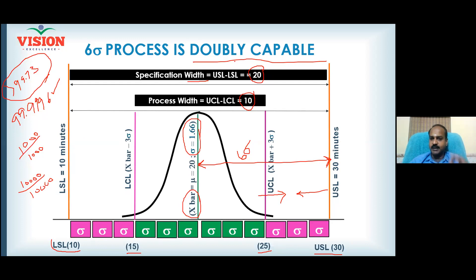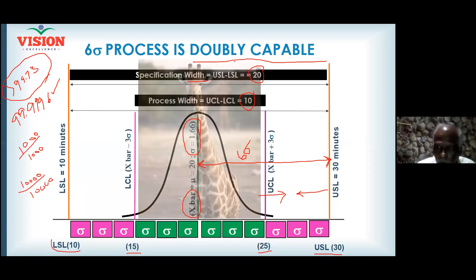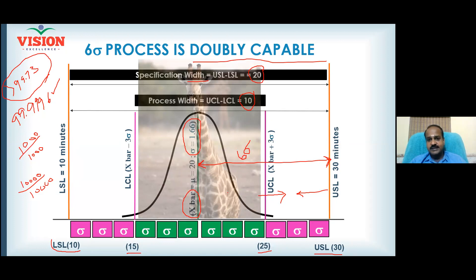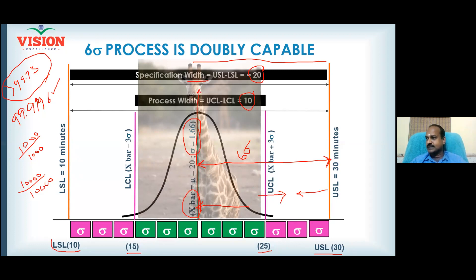This is called six sigma capability — the process is called doubly capable. You have converted your elephant into a giraffe. Why a giraffe? Because my graph has become narrower. When all points come closer to the center, the graph becomes narrower and also taller. A narrower, taller graph represents advantageous business. I call this the 'giraffe process' to help you remember this concept.